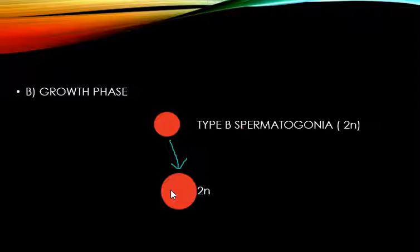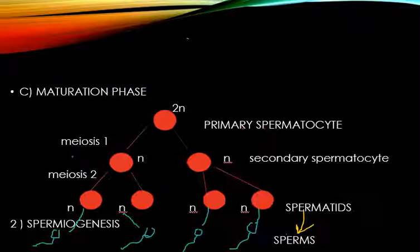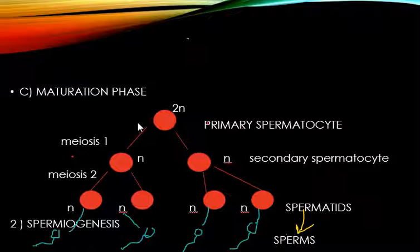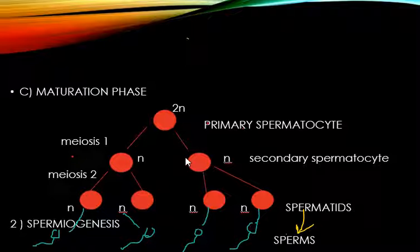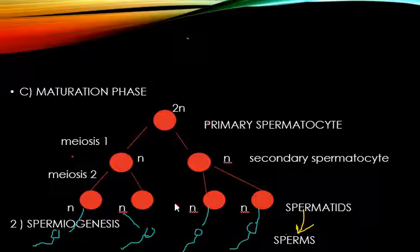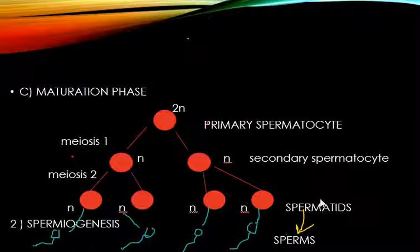Ab humara last phase aa gaya hai, jo ki hai maturation phase. Ab yeh primary spermatocyte joh hai, iska meiosis one hoga. Meiosis one mein reduction division hoti hai, toh yahaan par yeh haploid cells mein convert ho jaayenge. In haploid cells ko hum kehte hain secondary spermatocyte. In haploid cells ka phir se meiosis two hoga. Meiosis two equational division hai, toh yahaan par yeh haploid hi rahenge. Ab hamare paas four spermatids ban gaye hain — aur yahi tha first step ka poora purpose: spermatids ki formation.